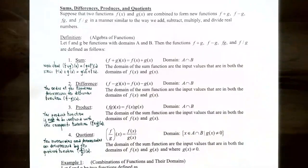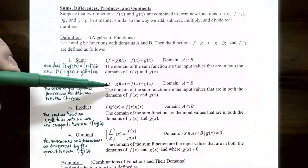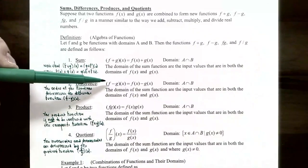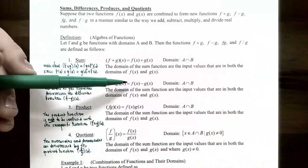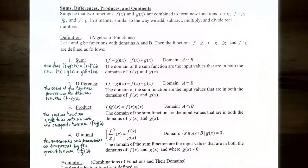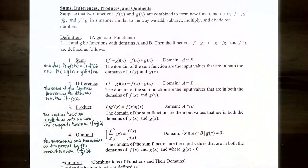The difference function is f subtract g of x, and notice that the order is important — f comes first, then subtract g, so it's f of x minus g of x. Its domain is also A intersect B, the intersection of the domain of f and the domain of g — the x values that are in common with both domains.